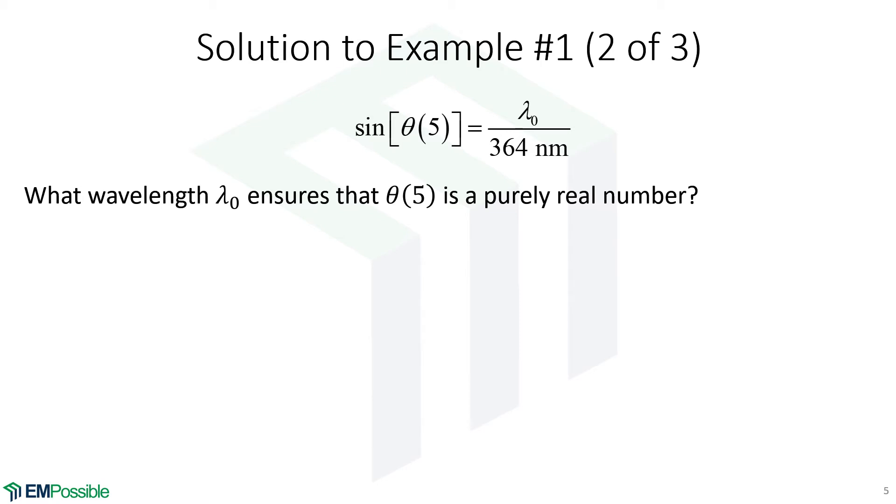So we start off with the equation in the last slide, and we're asking what wavelength ensures that theta, the angle of the fifth order diffraction order, is a purely real number? So what we need is the term on the right-hand side to be less than or equal to 1. When this is greater than 1, that's when it doesn't make sense to calculate the inverse sine of that because that ends up with an imaginary angle. So we need that argument to be less than or equal to 1. Now we can solve this inequality for the wavelength, and we see that as long as the free space wavelength is less than or equal to 364 nanometers, we will ensure that that fifth order diffracted mode exists. So the final answer is that longest wavelength is 364 nanometers.